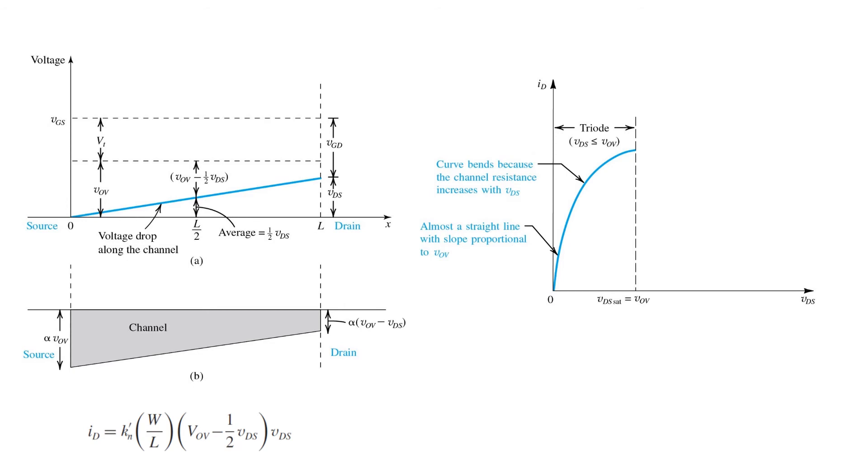So if we return now to our experiment where we apply a VGS exceeding the threshold voltage so the channel is inverted, and we start slowly increasing VDS from zero, we see that we get a straight line at first with a slope proportional to VOV, as long as this term is negligible, but that eventually this term starts to take over and the curve bends and reveals its quadratic nature.